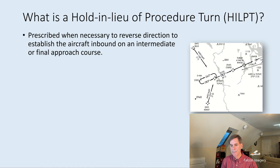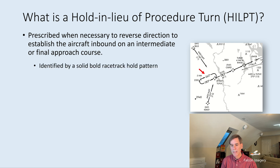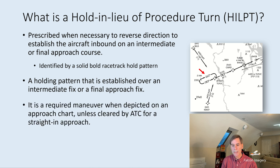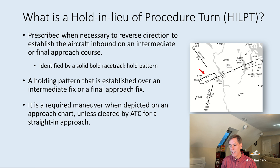Now let's go over what a hold in lieu of procedure turn is, or HILPT. It's prescribed when necessary to reverse direction to establish the aircraft inbound on an intermediate or final approach course. It's identified by a bold solid racetrack hold pattern. It is a required maneuver when depicted on an approach chart unless cleared by ATC for a straight-in approach. Sometimes ATC will ask if you want to fly the procedural hold or go straight in — if you're at the right altitude, you can go straight in, but if you need to lose altitude, you may want to fly the procedural hold.